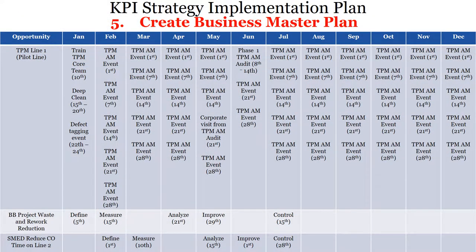Step 5: Create Business Master Plan. After the loss analysis is performed, the top losses are compared to the critical business needs, the Organizational Master Plan, and the Corporate KPIs. The top losses are then assigned to projects such as Continuous Improvement Projects, Kaizens, OPEX, CAPEX Projects, etc., aimed at successfully meeting the Organizational Master Plan and Critical Business Needs. The Master Plan will consist of each project, the project's goals, the team leader, and be placed under the appropriate time frame.